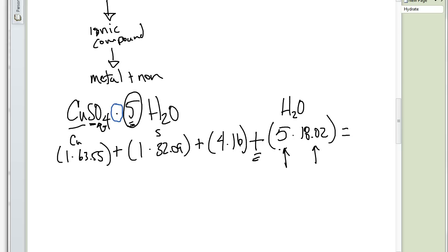Let me pull out a calculator real fast and we'll get you the answer there. So I ran that through my calculator, and I come up with 249.74 grams per mole for our molar mass of our copper sulfate pentahydrate.